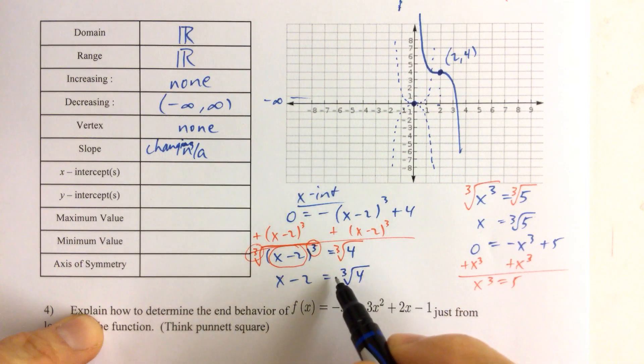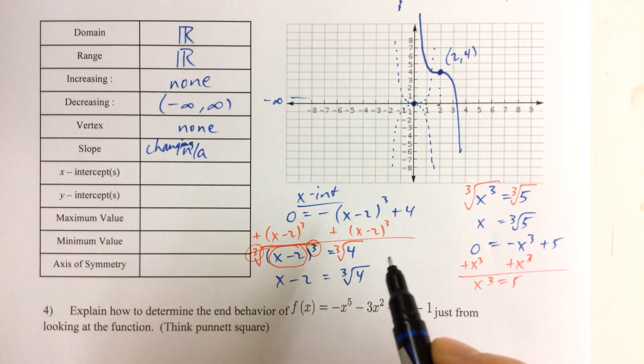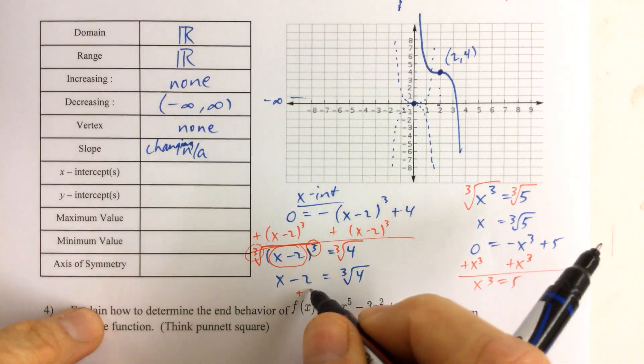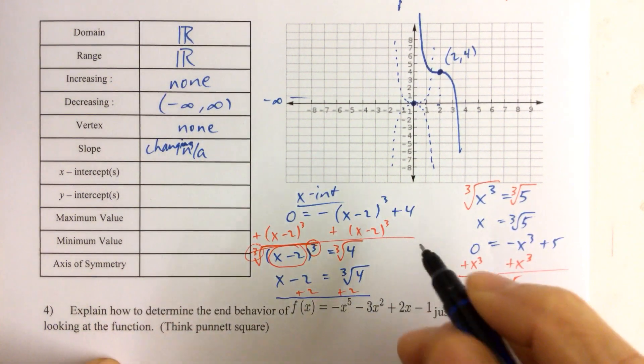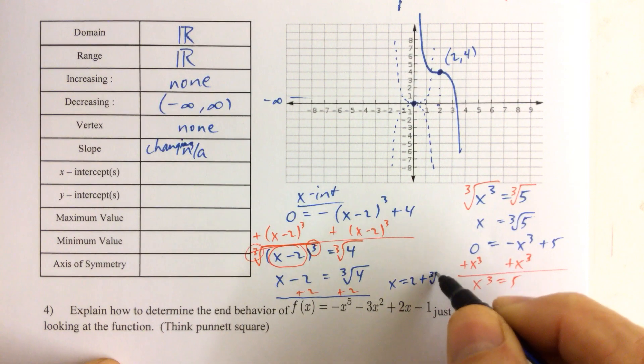We just get x minus 2 equals the cube root of 4. Don't even think about putting a plus or minus there. With cube root or any odd root, we don't have plus or minus. It's only when we have squared or any other even root. So we have plus 2 to both sides, and we get x equals 2 plus cube root of 4.